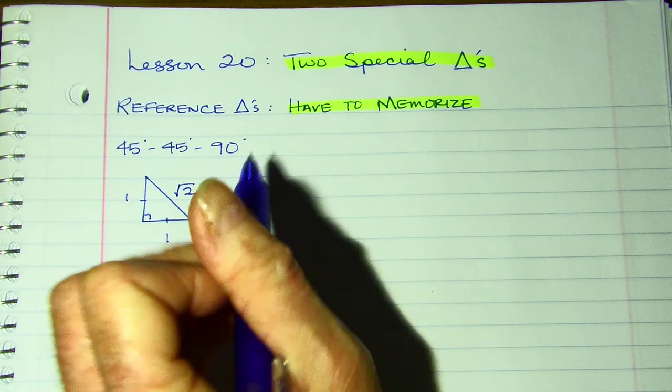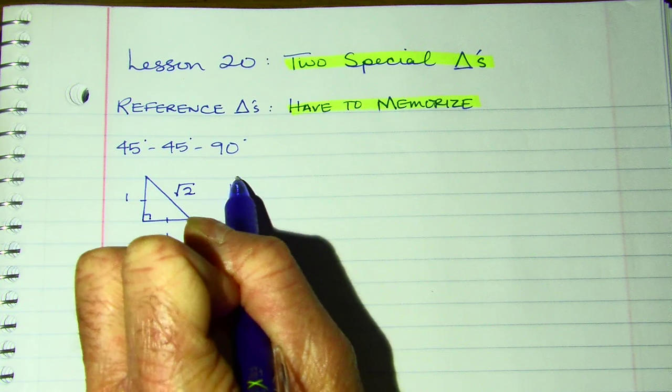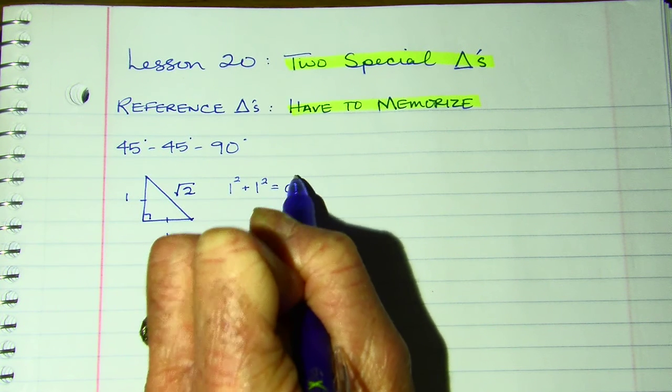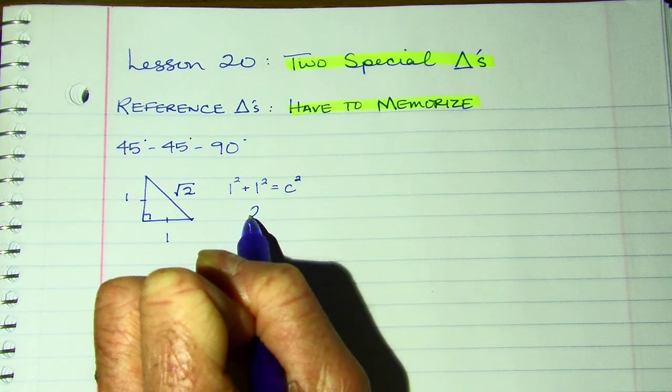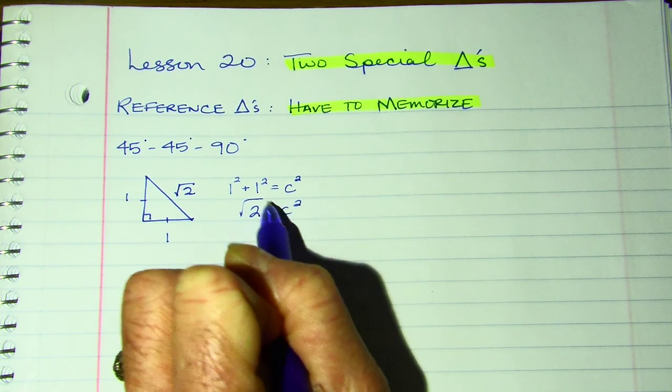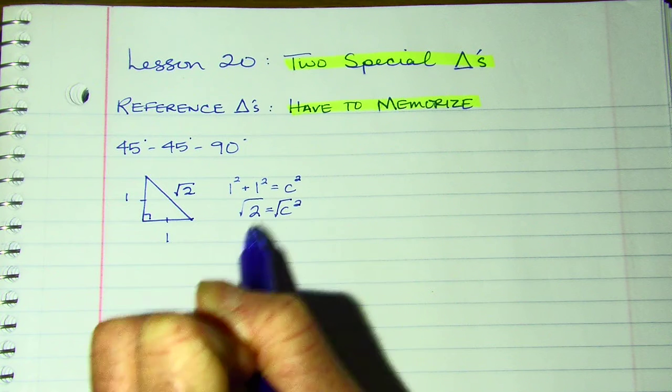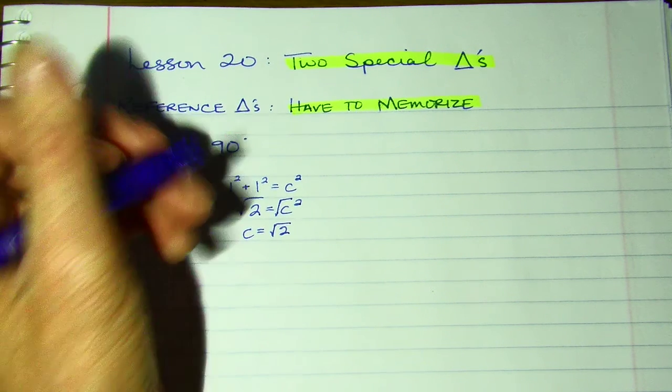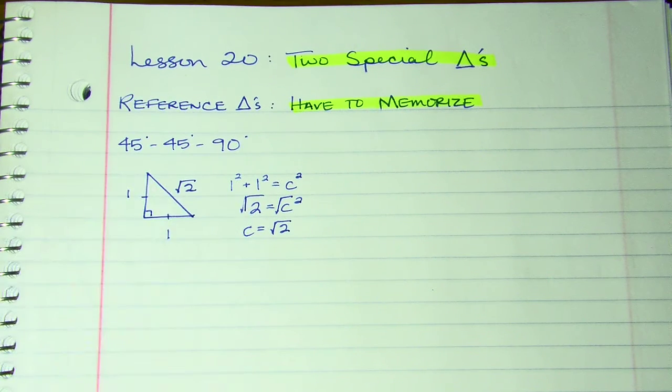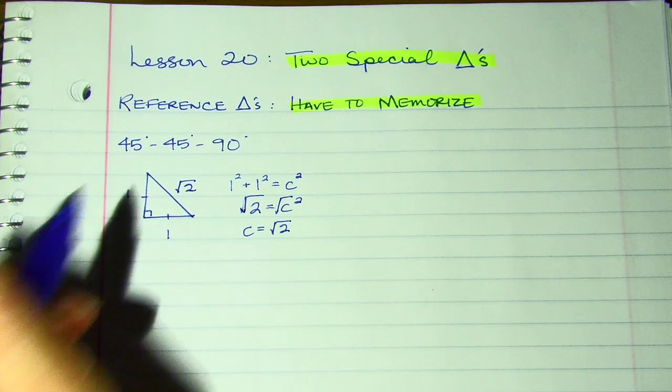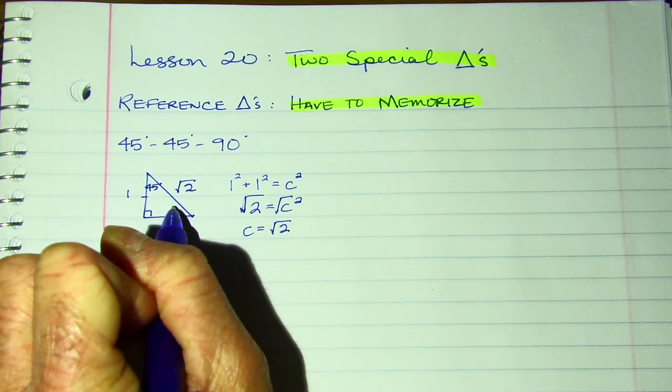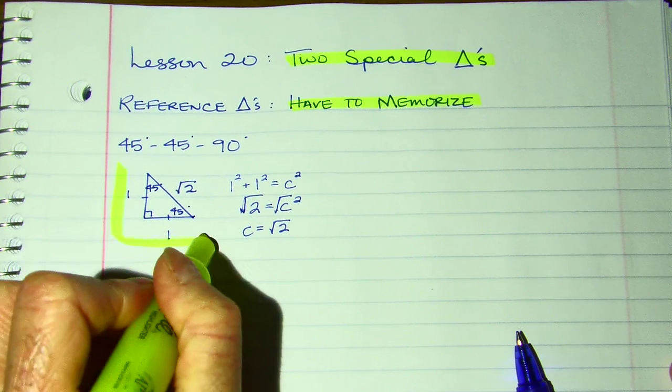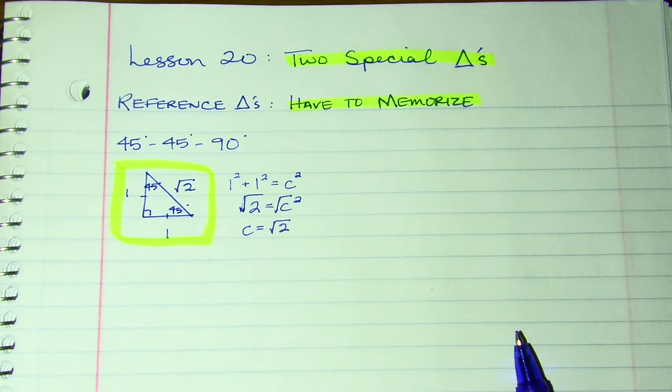Now the reason this is square root 2 is because to find the hypotenuse, I would do a squared plus b squared equals c squared. This would give me 2 equals c squared. I would take the square root, and guess what I would get for c? The square root of 2. So this isn't being made up. It's root 2 because that's how you would find your hypotenuse. So this is your 45, and this is 45. But this picture of this triangle, you need to memorize that: 1, 1, root 2.